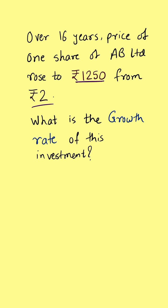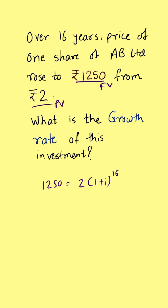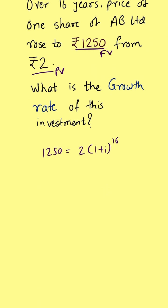How do we calculate CAGR? We take the starting value as PV and the end value as FV. Then we use the relationship: FV = PV × (1 + i)^N, where i is the interest or growth rate and N is 16 years. Dividing both sides by 2, we get 625 = (1 + i)^16.